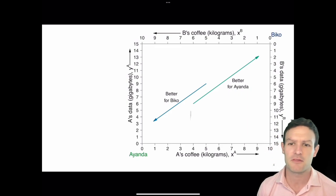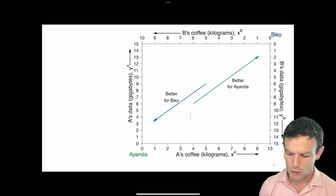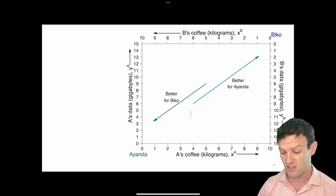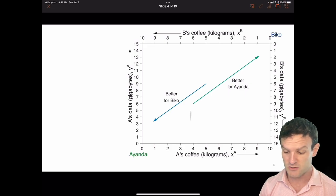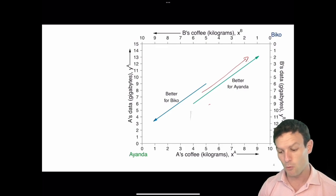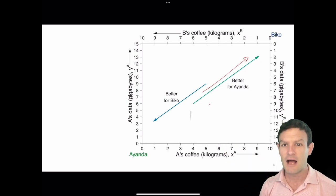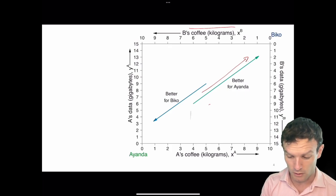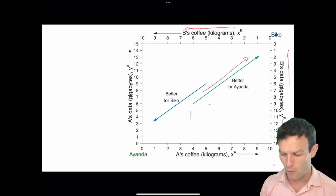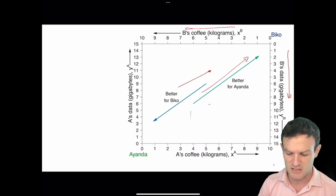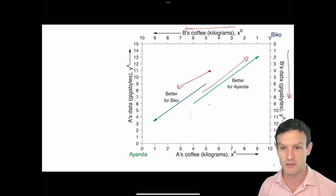When we think about the preferences they have as individuals: if Ayanda likes both coffee and data, there is an arrow going upwards suggesting what is better for her. Ayanda likes to get more of both goods — going up to the northeast is better for Ayanda. For Bicor, he gets more of x going from right to left, and more of y going from top to bottom, so going from northeast to southwest is better for Bicor.